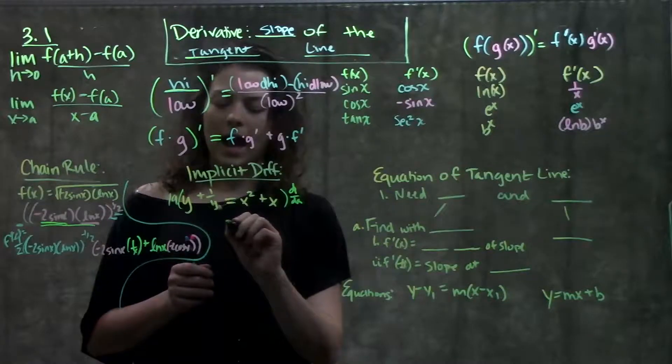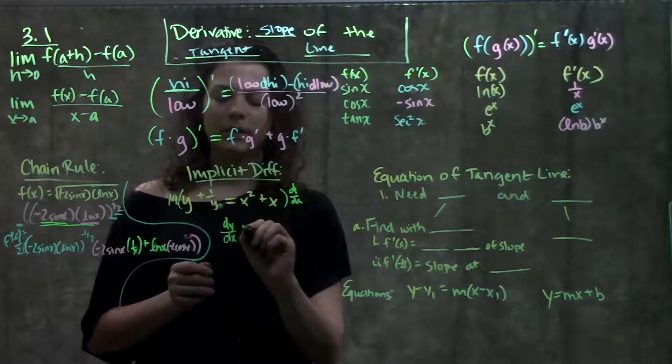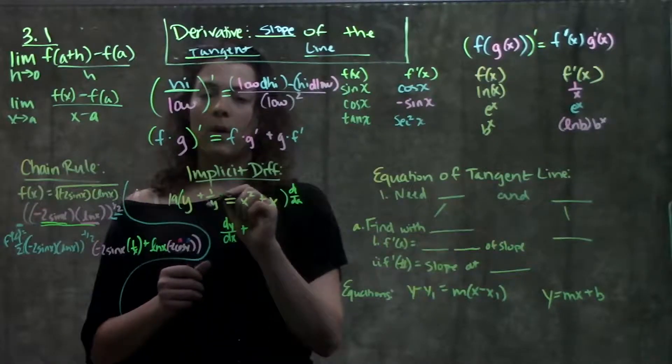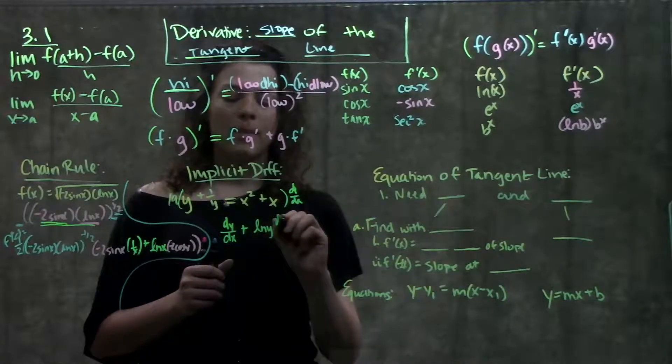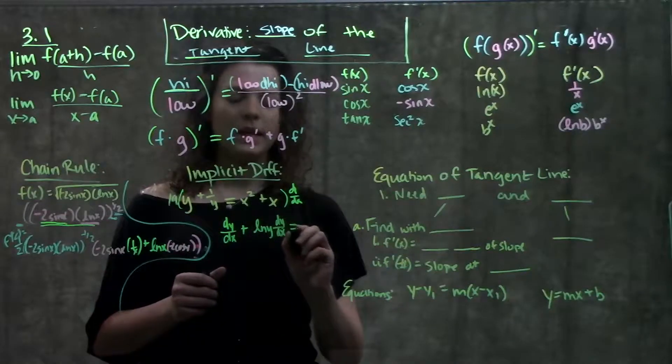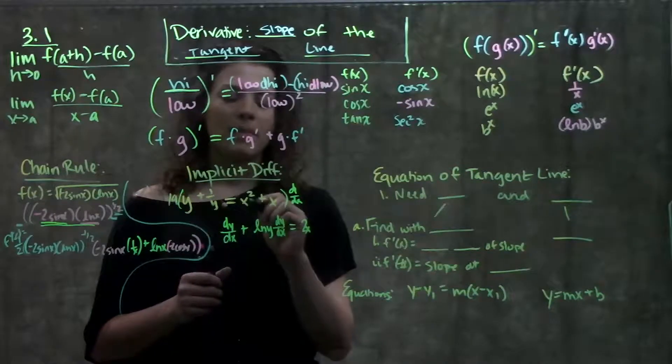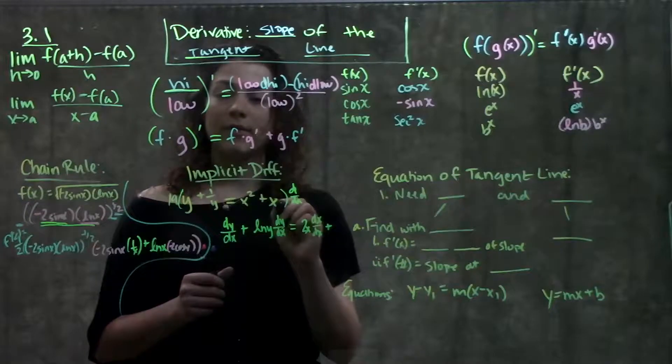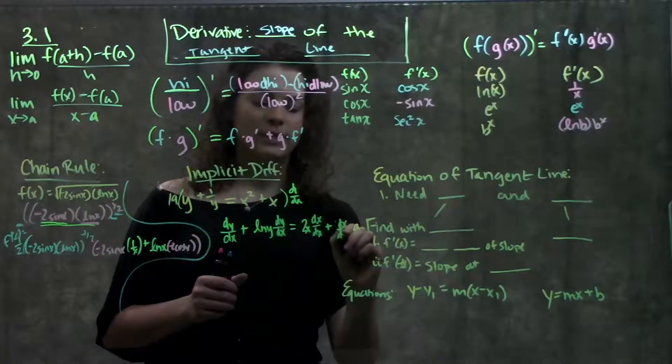The way I like to think about this is I'm distributing this derivative to each term. So on the left here, I have dy over dx plus this is y to the minus 1. The derivative of y to the minus 1 will be ln y. But remember, we have to keep our dy over dx here. And then equals on the right side, derivative of x squared is just 2x. Remember, I have dx over dx plus derivative of x is just 1. So that's 1 times dx over dx.